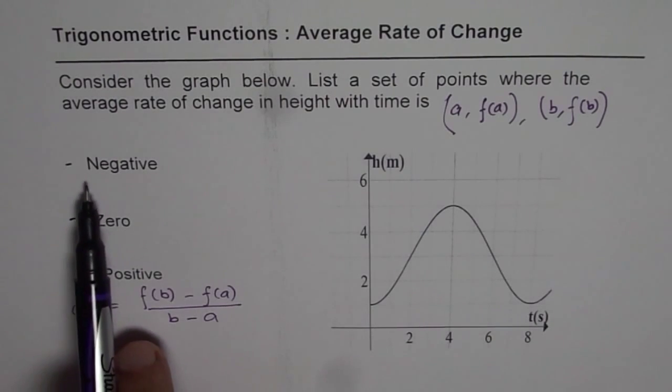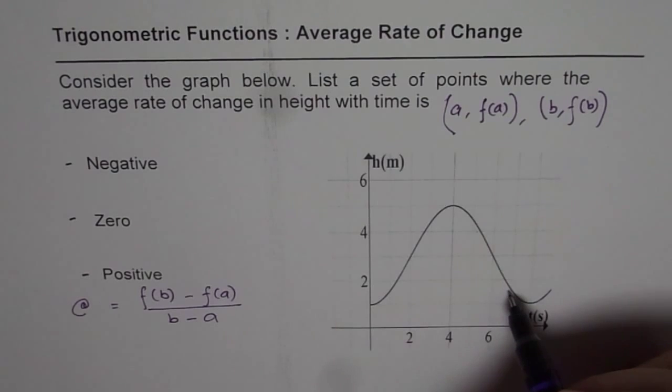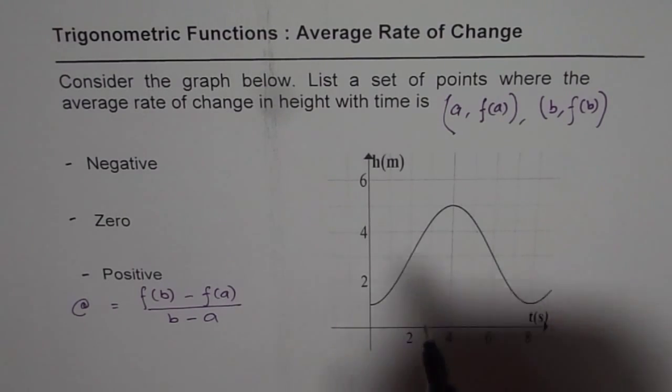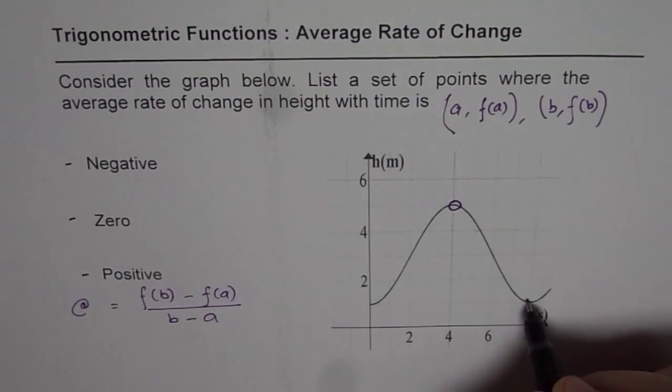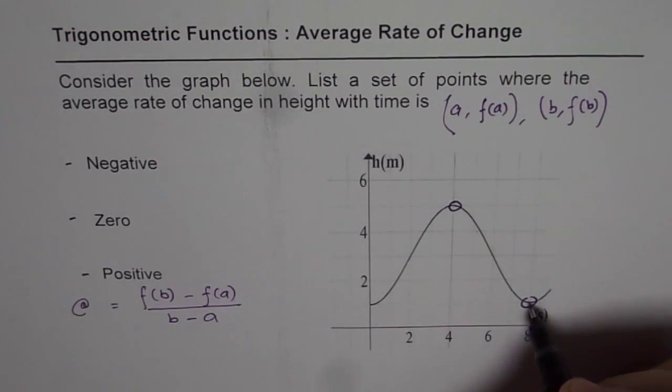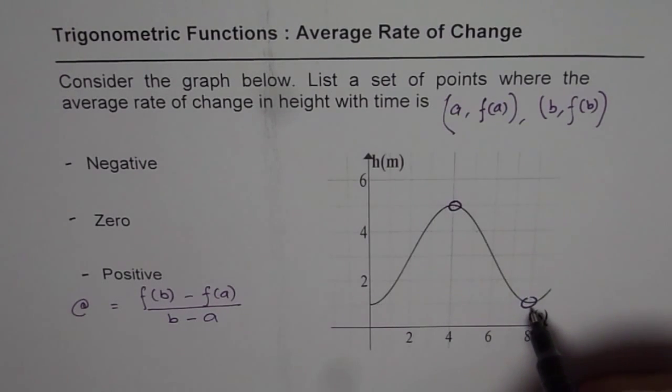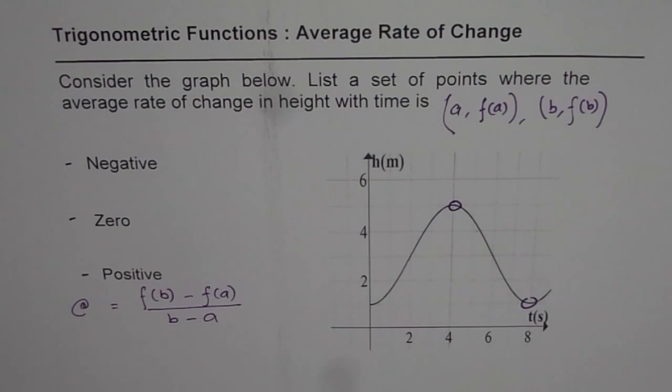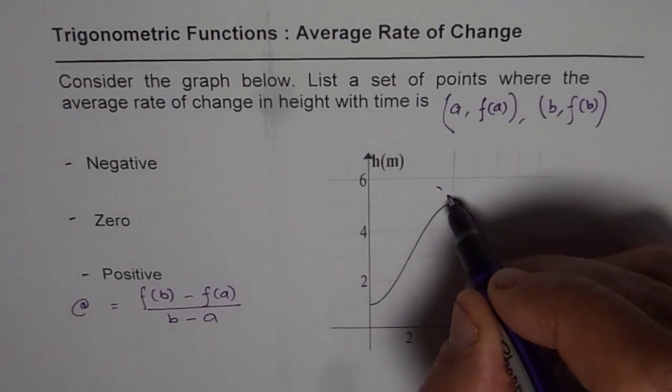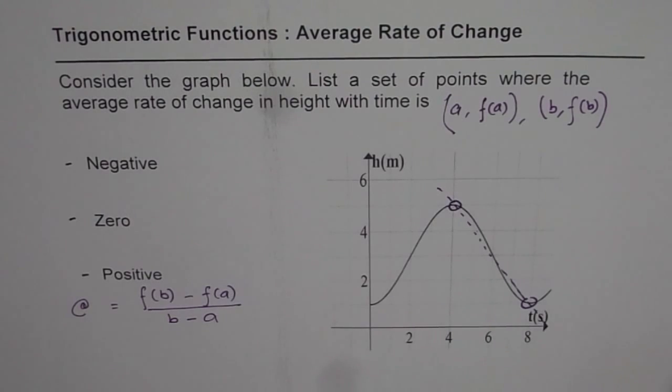Now when we say negative, that means we are taking two points. If we join them, then we get negative slope. So we could take points like a point here and a point here. So in that case, if I join them, then the line joining them will be falling downwards as we see from left to right. So it will have a negative slope. So that could be the set of points of our interest. So on a graph, you can draw many points which will give you negative average rate of change.